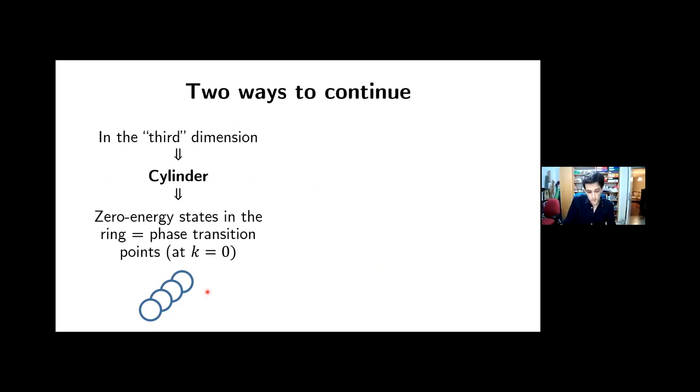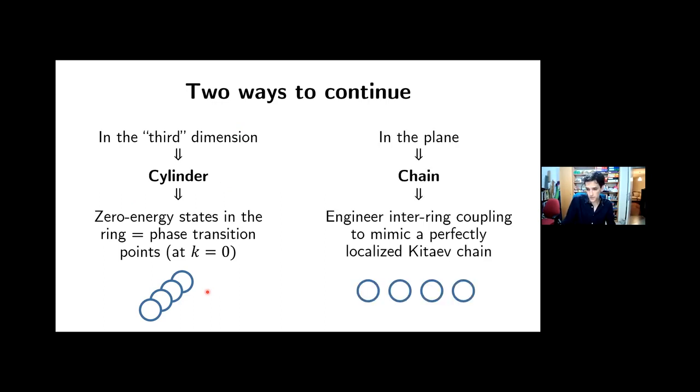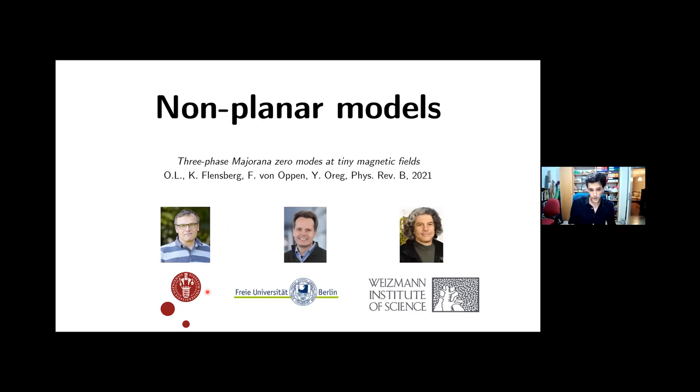And the other way to continue is a chain. So now we have these copies of the rings and we're coupling them inside the plane. And the way we thought of this model is by an analogy to the Kitaev chain, and we can actually engineer the coupling between the rings to mimic the perfectly localized points of the Kitaev chain. So these are the two directions that we explored, and I'm going to now introduce them one by one, starting with the non-planar models. So this is a work in collaboration with Karsten Flensberg, Felix von Oppen, and Yuval Oreg.